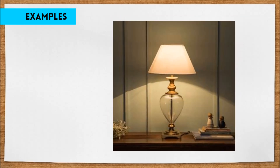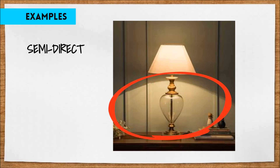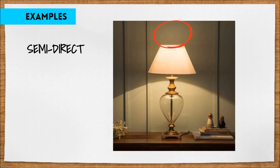Here's your last example. What would you classify this one as? This lamp has semi-direct distribution. You can see in the photo that the majority of the light is directed downward, but there is a small portion directed upward.